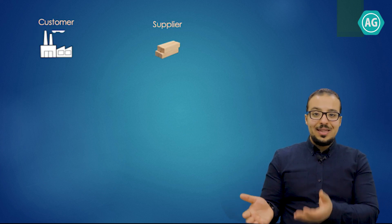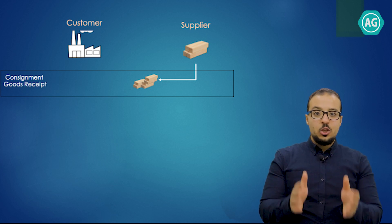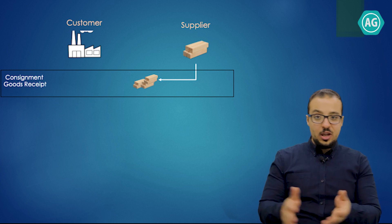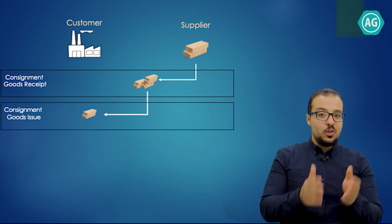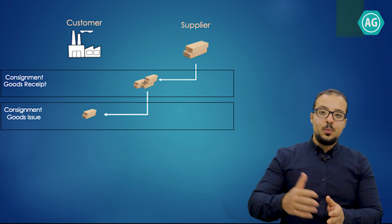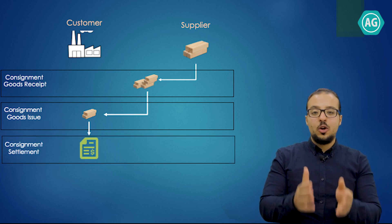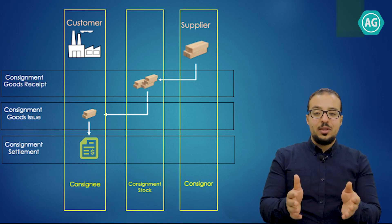To understand the meaning of consignment, let's take a simple example. We have a company that produces chairs and always needs wood as a main component. We made a deal with our supplier to transport a large amount of wood into our storage location without selling the stock to us — the owner is still the supplier. Once we consume this stock, we post the financial entries for goods receipt and goods issue at the same time, and after an agreed period we post a supplier invoice for the total amount used. This is called the consignment process.